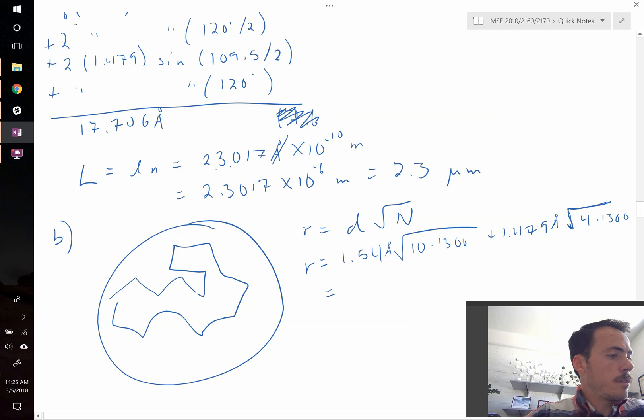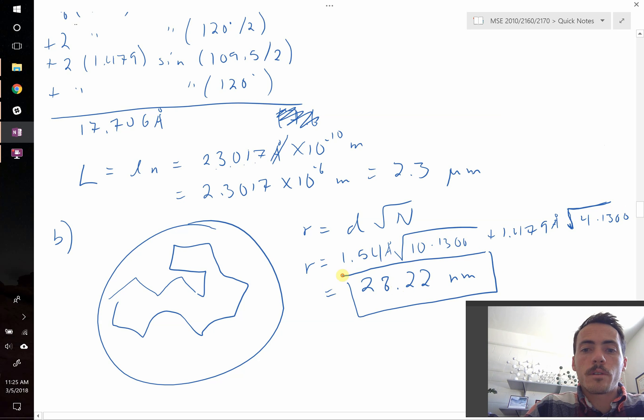When I plug those in, let's see, I get a total value of 28.22 nanometers, or in other words, 282 angstroms. So that would be the size of this particle if that was the function that described its radius.